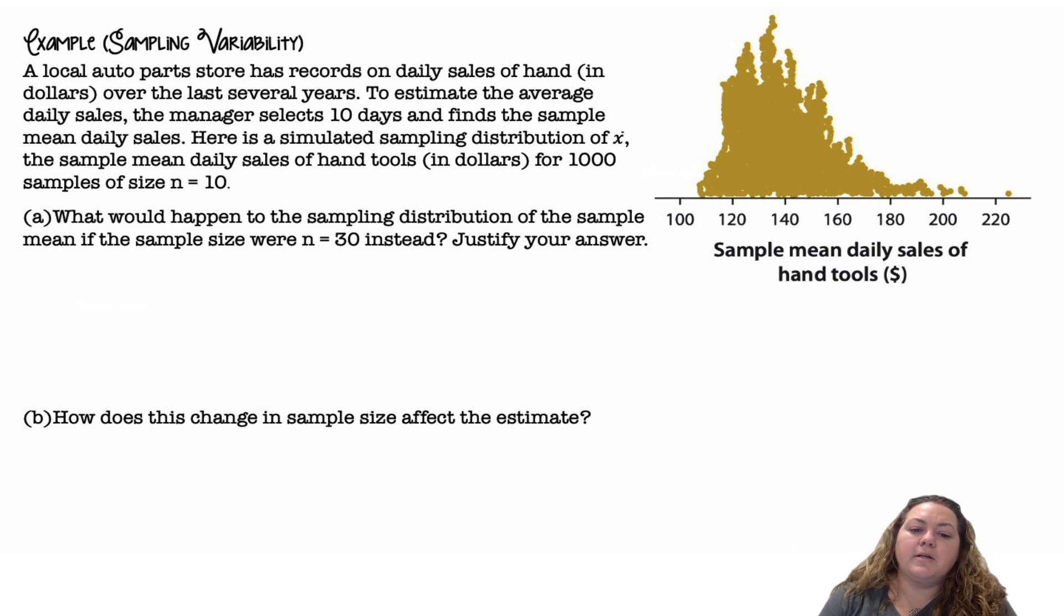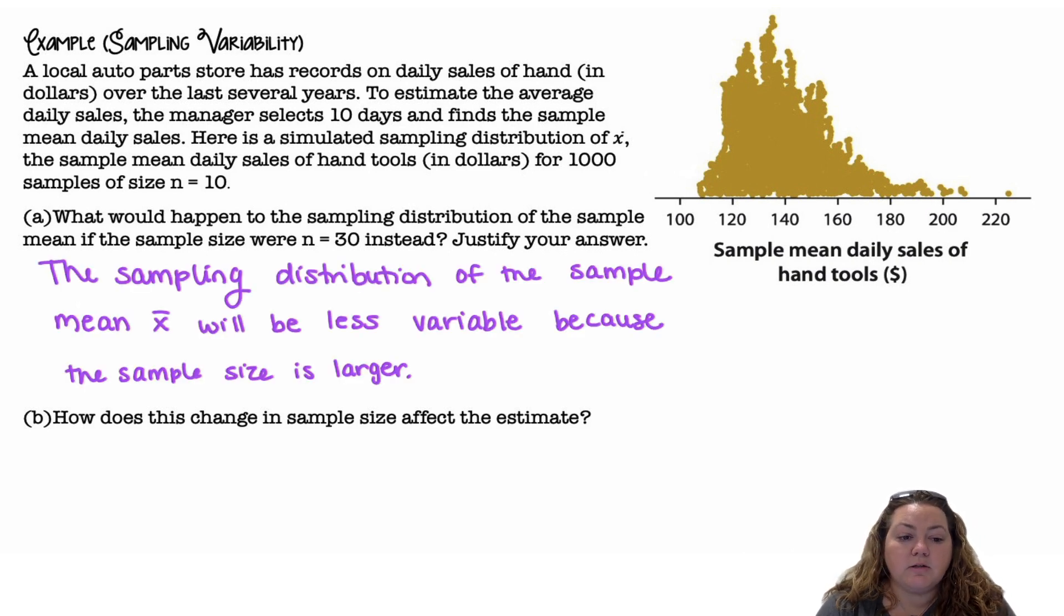What would happen to the sampling distribution of the sample mean if the sample size were n equals 30 instead of n equals 10? Justify your answer. So my sample size went up, which means my variability will go down. The sampling distribution of the sample mean x bar will be less variable because the sample size is larger.